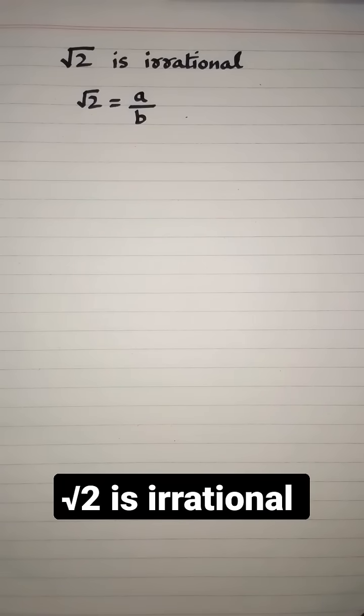Suppose the square root of 2 is a rational number, so it can be expressed as a ratio of two integers a and b with no common factors.